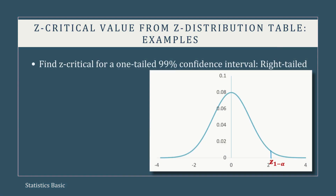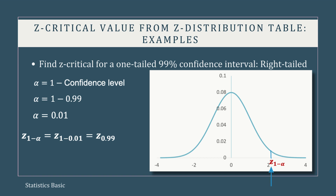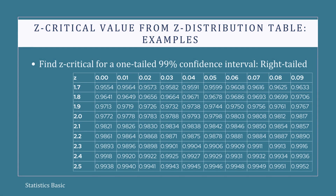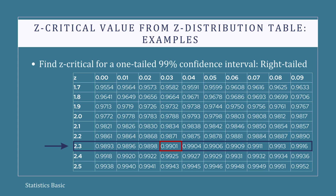In the third case, we are asked for a z-critical for a right-tailed 99% confidence interval. For a 99% confidence interval, the significance level is 1 minus the confidence level, that is 1 minus 0.99. The critical value lies on the right tail of the distribution. In the z-distribution table, locate the cell for the cumulative probability of 0.99. The corresponding row is z equals 2.3 and the corresponding column is z equals 0.03. This means the z-critical value is 2.33.